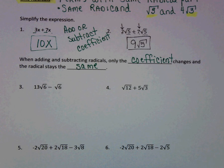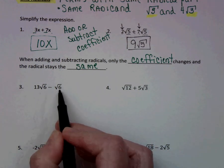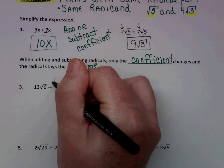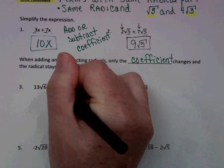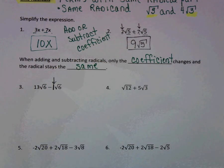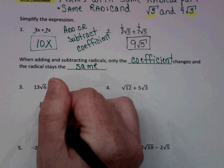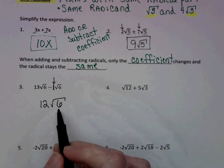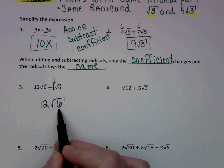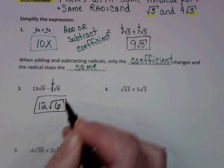On number 3, do we have like radicals? Yes we do. What would be the coefficient here? I hope you're thinking 1, because that's understood. So this is 13 minus 1, which is 12, and then the radical part stays the same. Now, is the square root of 6 in simplest radical form? Yes it is. So we're done — that's all we have to do for that problem.